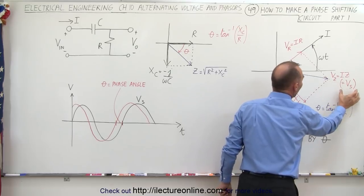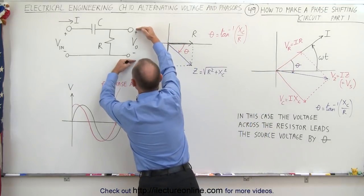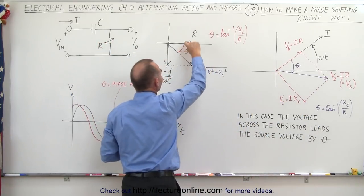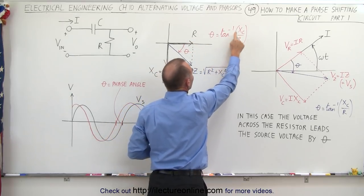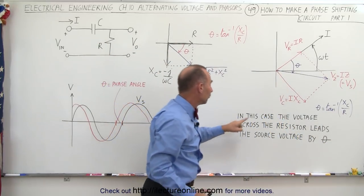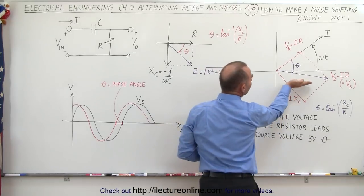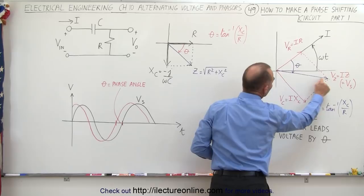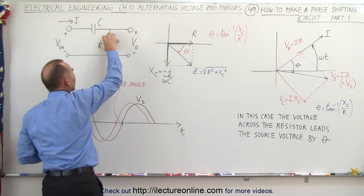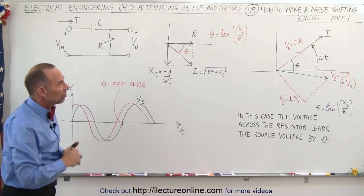V sub Z is also equal to the voltage across the source, which means that V sub R — the output voltage — has a phase difference with V sub Z, the source voltage. That phase difference is the same angle theta, equal to the inverse tangent of X sub C over R. So in this circuit, the voltage across the resistor leads the source voltage by the angle theta. By varying the frequency, the capacitance, or the resistance, we can change the phase difference between the output voltage and the input voltage — which is why this is called a phase shifting circuit.